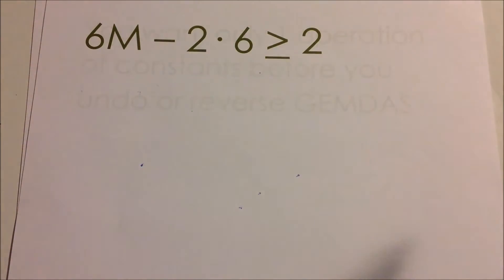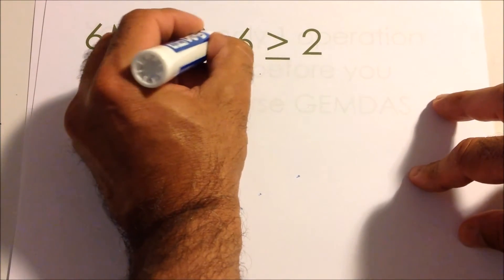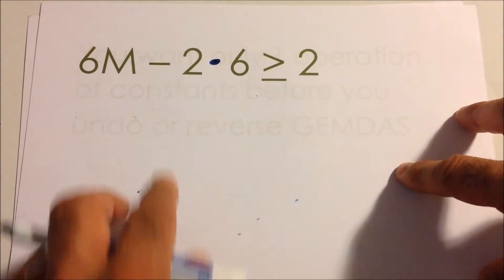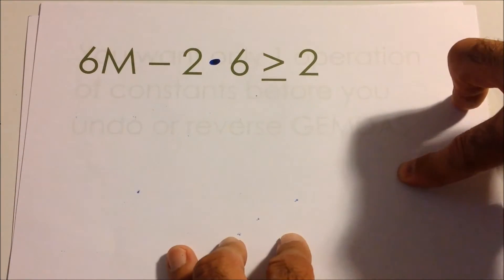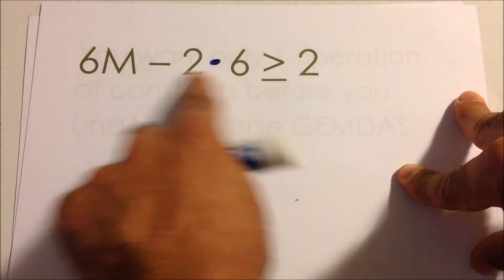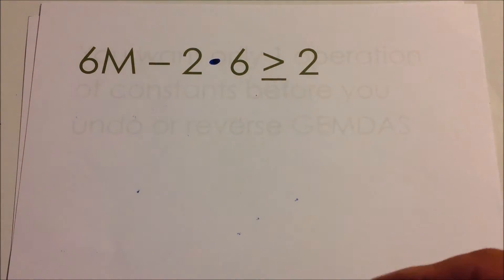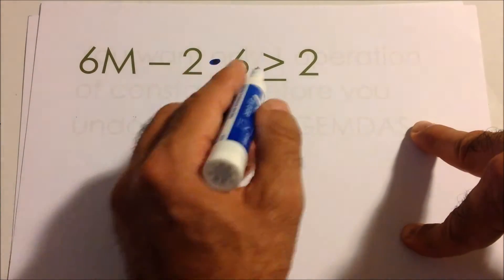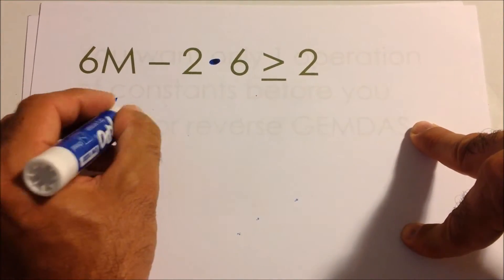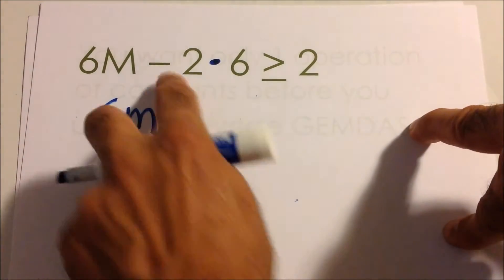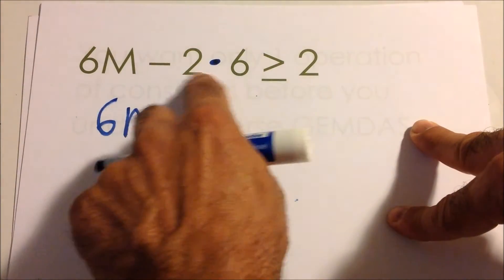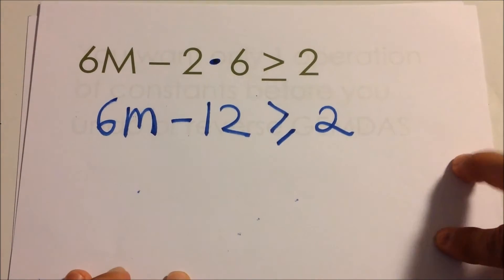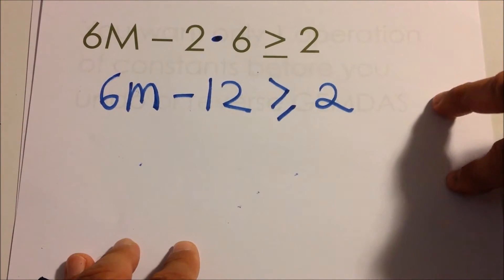This next one is a little tricky because we have more operations. Keep in mind — this is the only time you're going to use GEMDAS initially — because you want all the operations done before you unglue, and they're not done yet. You have too many operations on one side, so clean up any operations involving constants. We bring down the 6m and calculate negative 2 times 6, which is negative 12.